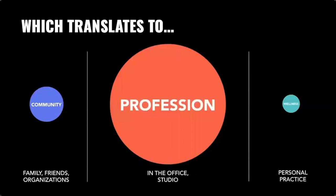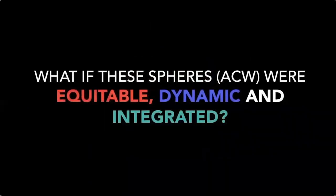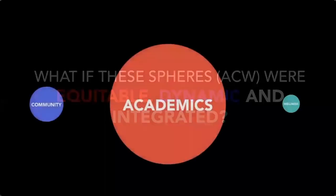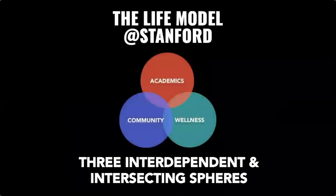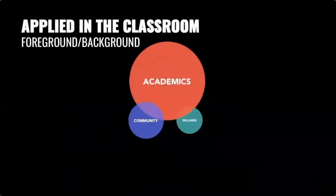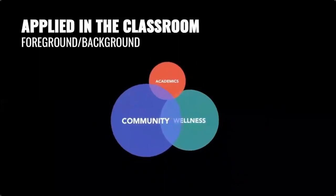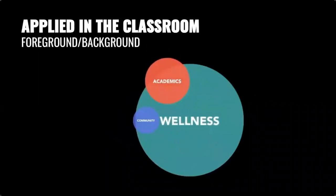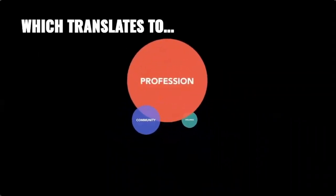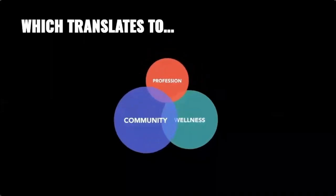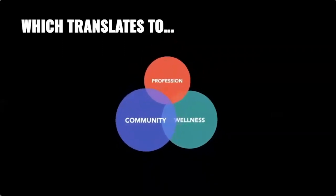Students turn into professionals who spend a disproportionate amount of time in the studio, at the sacrifice of friends, family, and communities, and wellness is just reduced to some personal practice. We wondered: what would it be like if these areas of academics, community, and wellness were dynamic, equitable, and integrated? When we thought of the classroom, we thought of a foreground and background relationship between academics, community, and wellness — at a base level, they all belong, but in any moment you could center one over the other, or include all three.